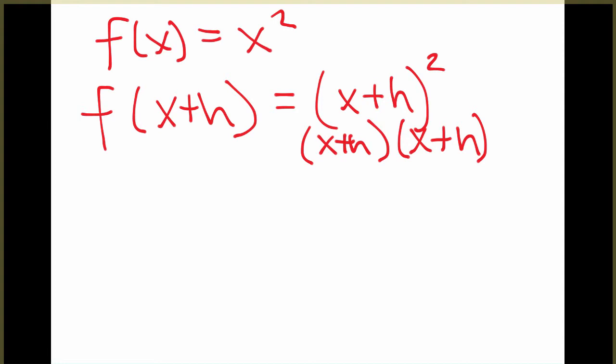So if you have to foil that out, feel free to do so. I've done it so many times, it's always equal to the same thing. I know that it will equal x squared plus 2xh plus h squared. So that is my f of x plus h.